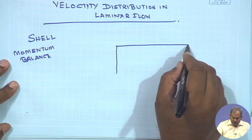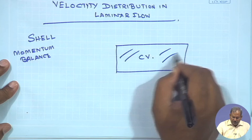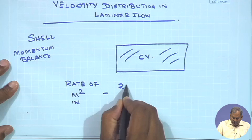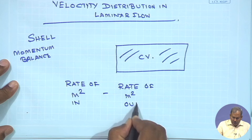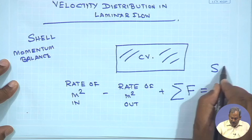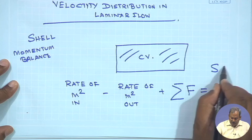Consider a control volume consisting of some fluid. The governing relation is: the rate of momentum in minus the rate of momentum out plus the sum of all forces acting on the control volume at steady state equals zero. This is very important at steady state — it means there is no unbalanced force acting on the control volume.